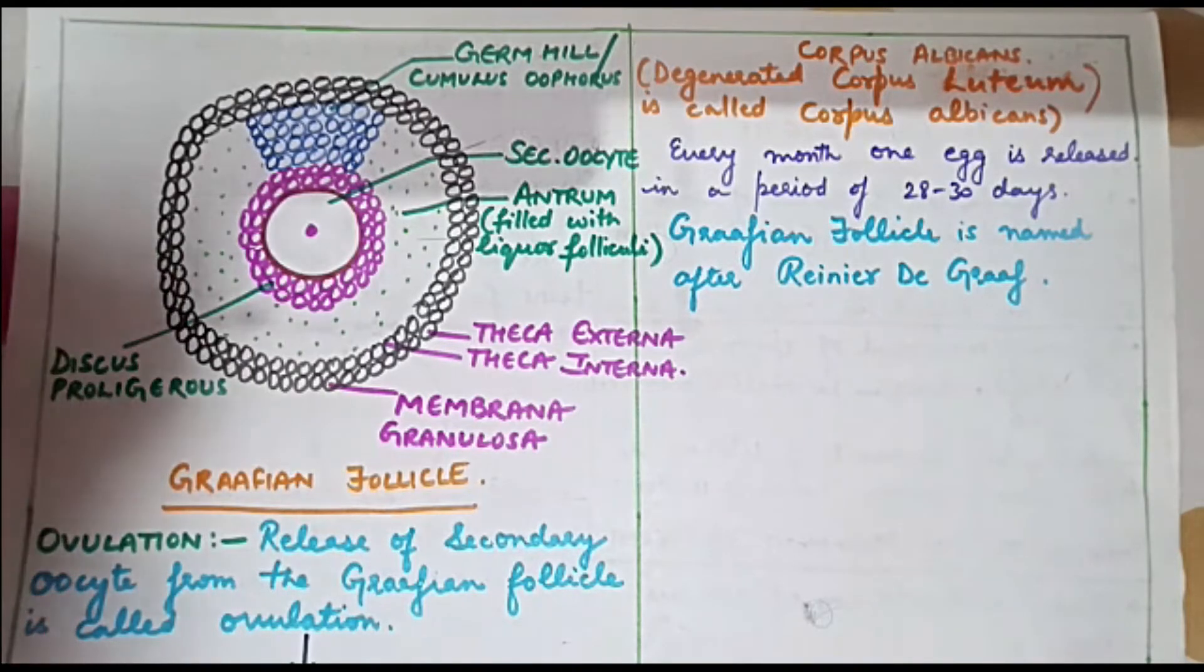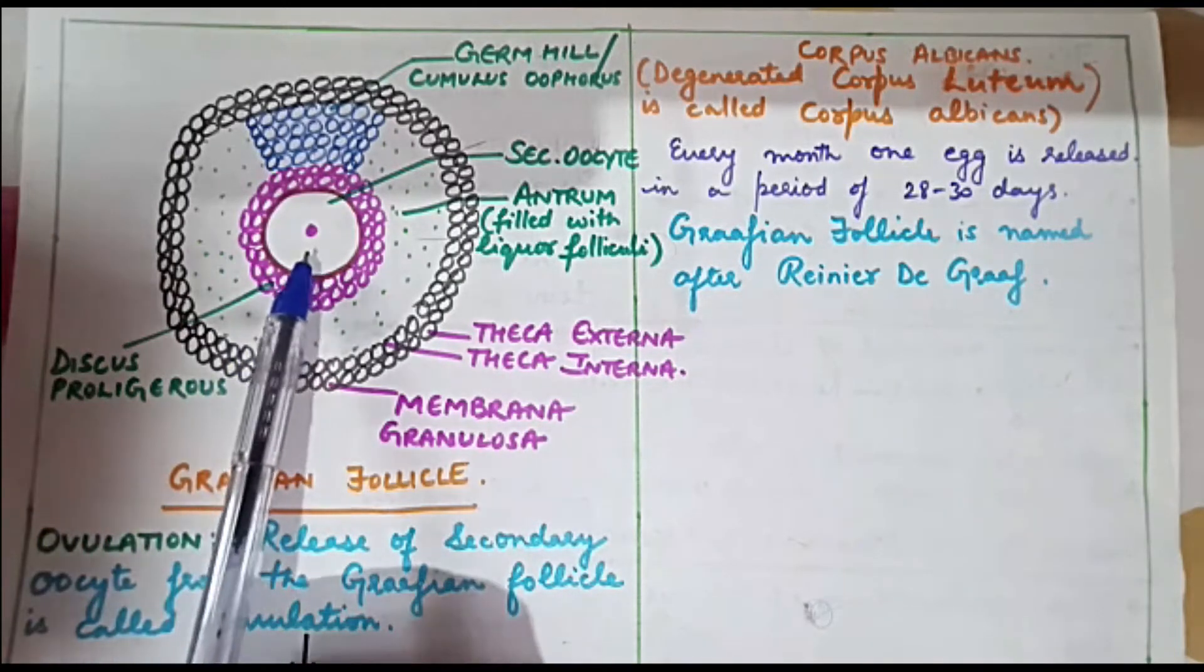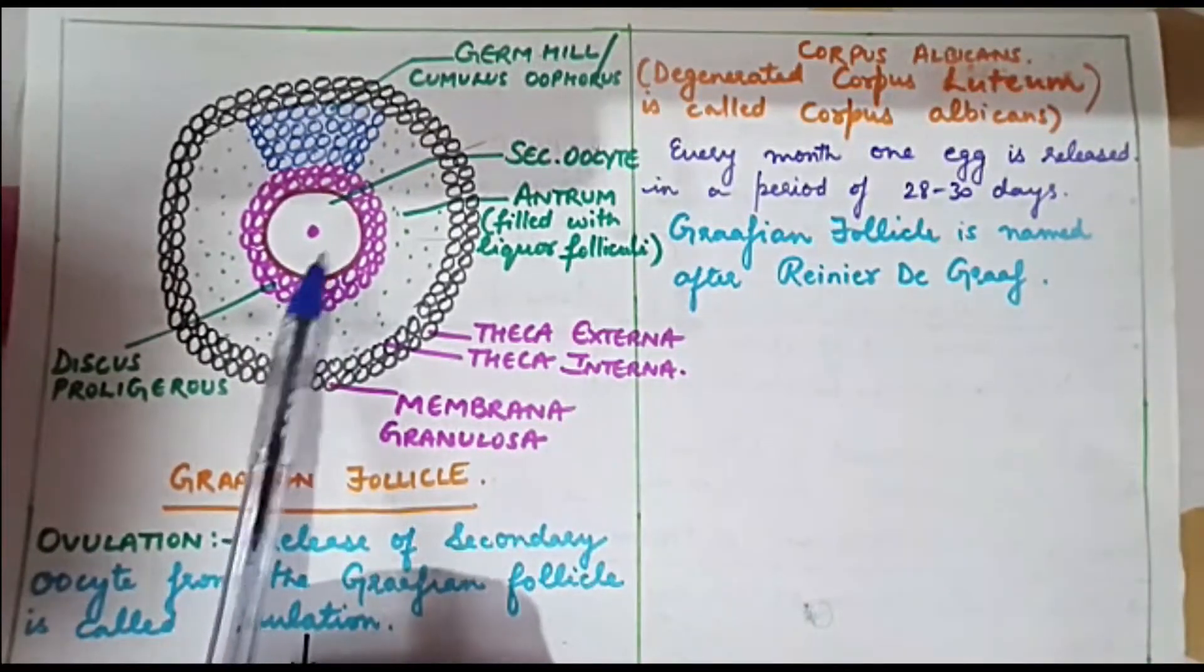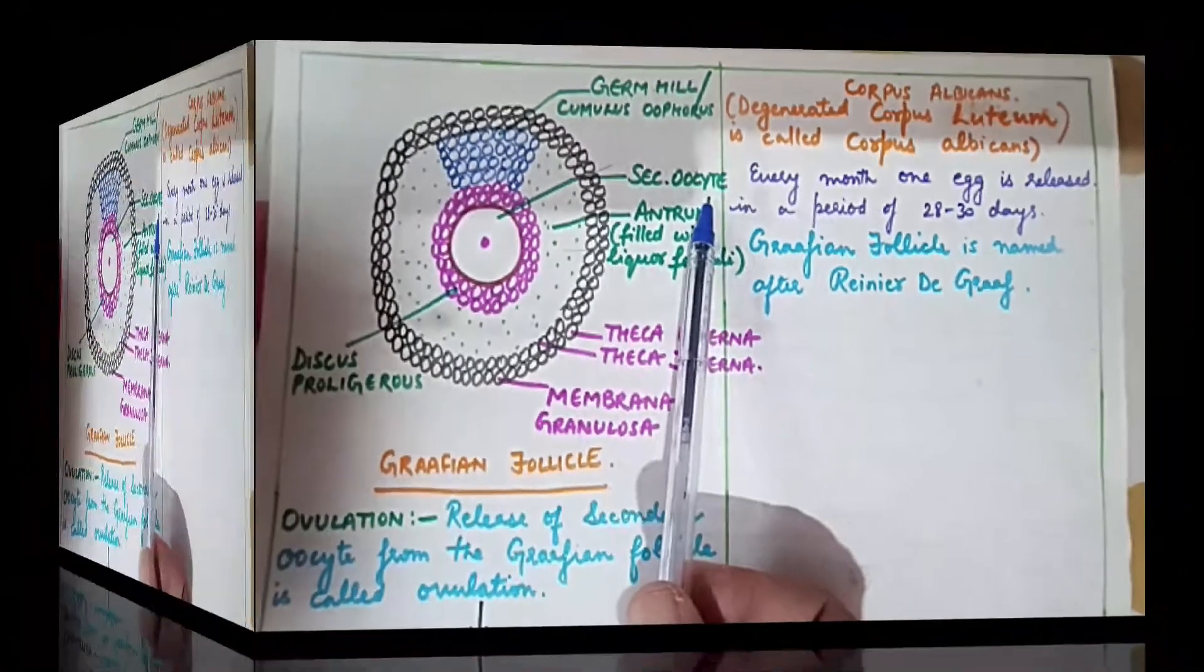In the structure of Graafian follicle, the egg or ovum is present in the central part of the Graafian follicle and it is present in its secondary oocyte stage.